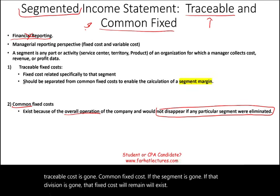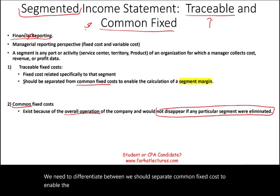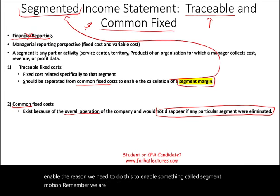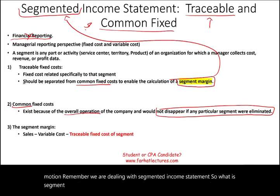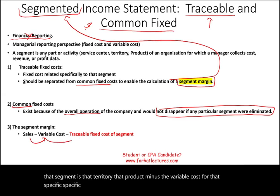We need to separate common fixed cost to enable something called segment margin. We are dealing with the segmented income statement, so segment margin is computed by taking the sales of that segment — whether it's a territory or a product — minus the variable cost for that specific segment, minus the traceable fixed cost for that specific segment.